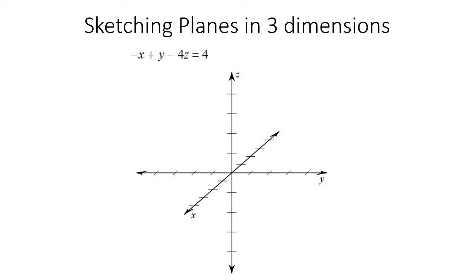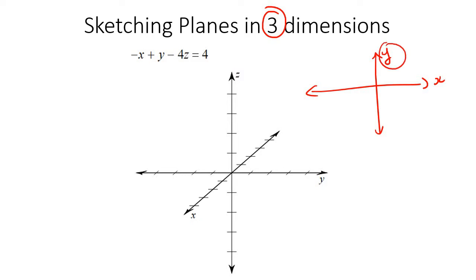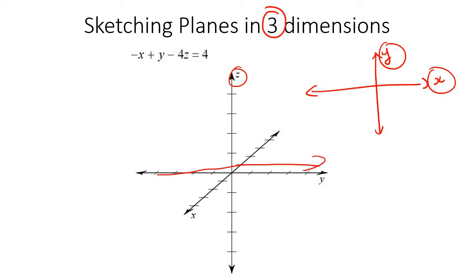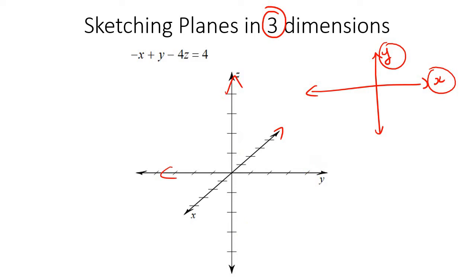In the previous lesson — I hope you've watched that one — we were introduced to three dimensions. Because normally we only have two dimensions: we have an x and a y, x in the horizontal and y in the vertical. But in the previous lesson, we started with three dimensions, where we now have an x-axis, a y-axis, and a z-axis. So now we're still going horizontally, still going vertically, but now we're also going into the page and out of the page. So we have three dimensions.